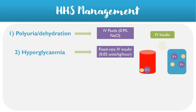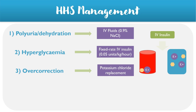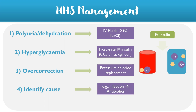In some cases, the blood potassium levels might decrease too much, so it's important to regularly monitor this and replace with potassium chloride if necessary. It's also important to treat the underlying cause — for example, in the case of infections, treating this with antibiotics — and combining this with VTE prophylaxis to reduce the risk of complications.